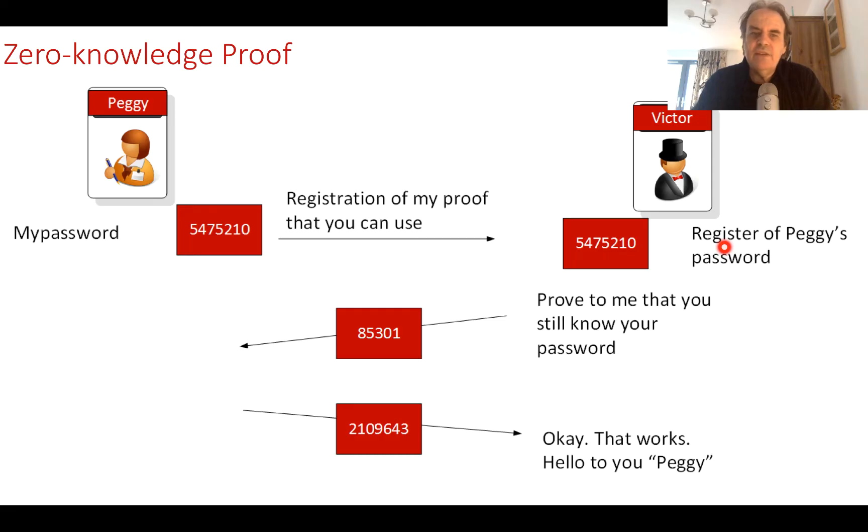That will identify the seed of Peggy's password. We will normally use a strong registration process to make sure that the seed of the value is well-defined, such as using multi-factor authentication. When Peggy wants to reset her password, she will go through the same process again with multi-factor authentication and generate a new seed.